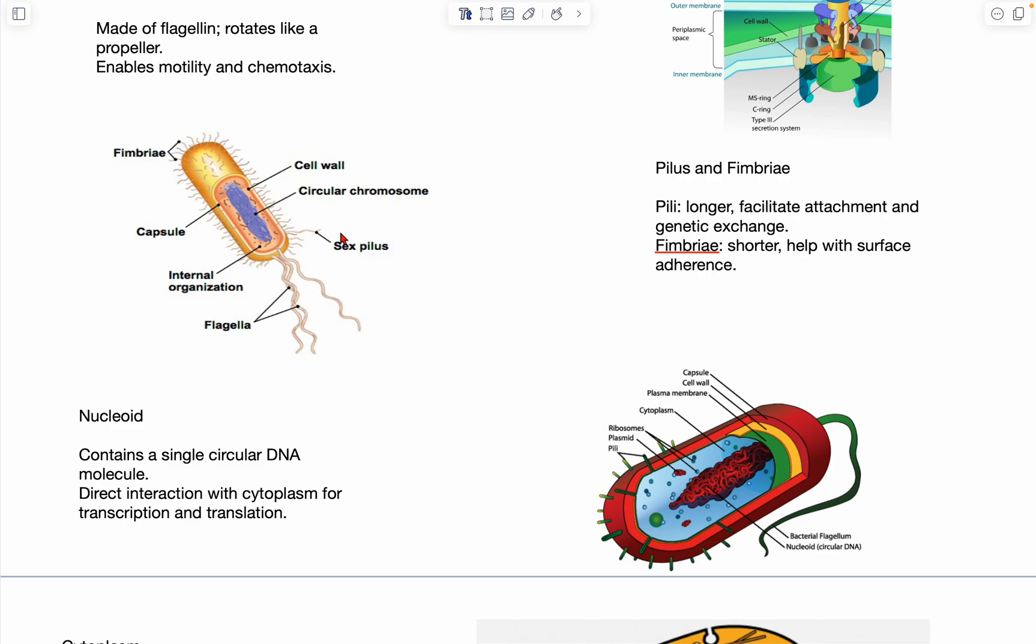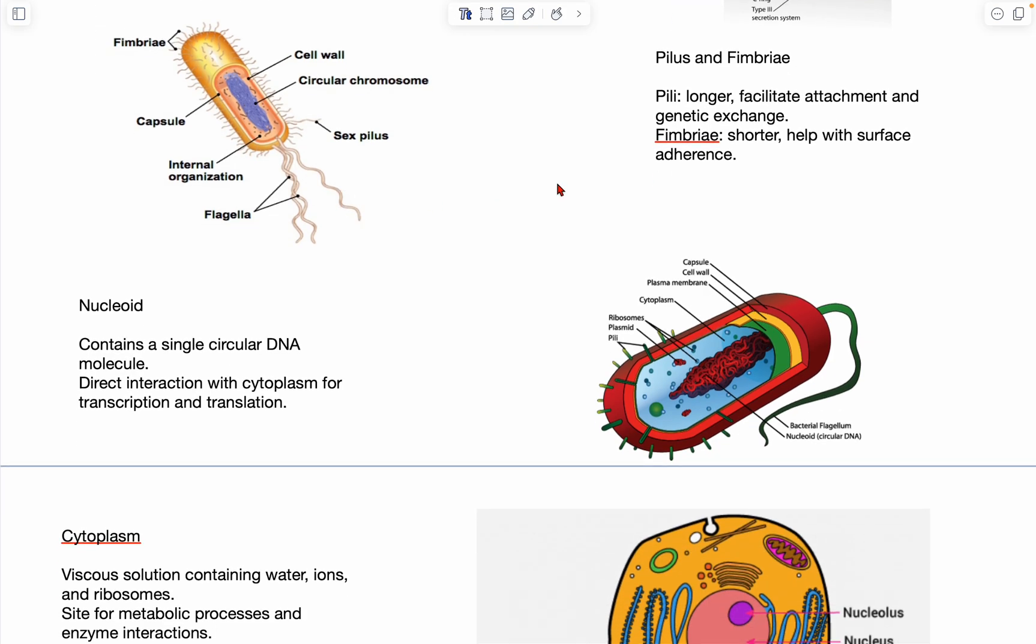All right, next is the nucleoid. And as you can see, there's supercoiled DNA here in the nucleus. And the nucleoid contains the bacterial chromosome, which is like a single circular DNA molecule that is essentially supercoiled for storage purposes. And then it's not closed by membrane, which allows it to directly interact with cytoplasm.